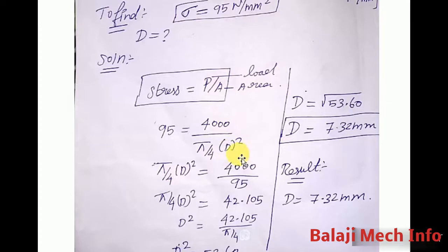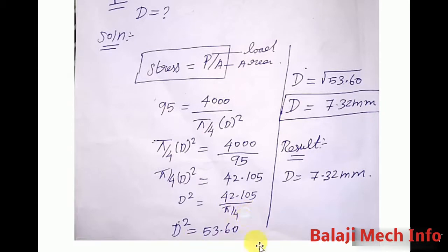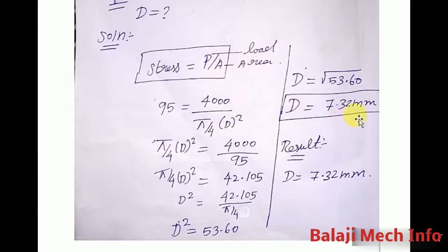Now we have to find D. Left hand side is 95, right hand side: 4,000 divided by 95 equals 42.105. Now divide by (π/4): 42.105 ÷ (π/4) = 53.60. So D² = 53.60. Taking the square root: D = 7.32 mm.